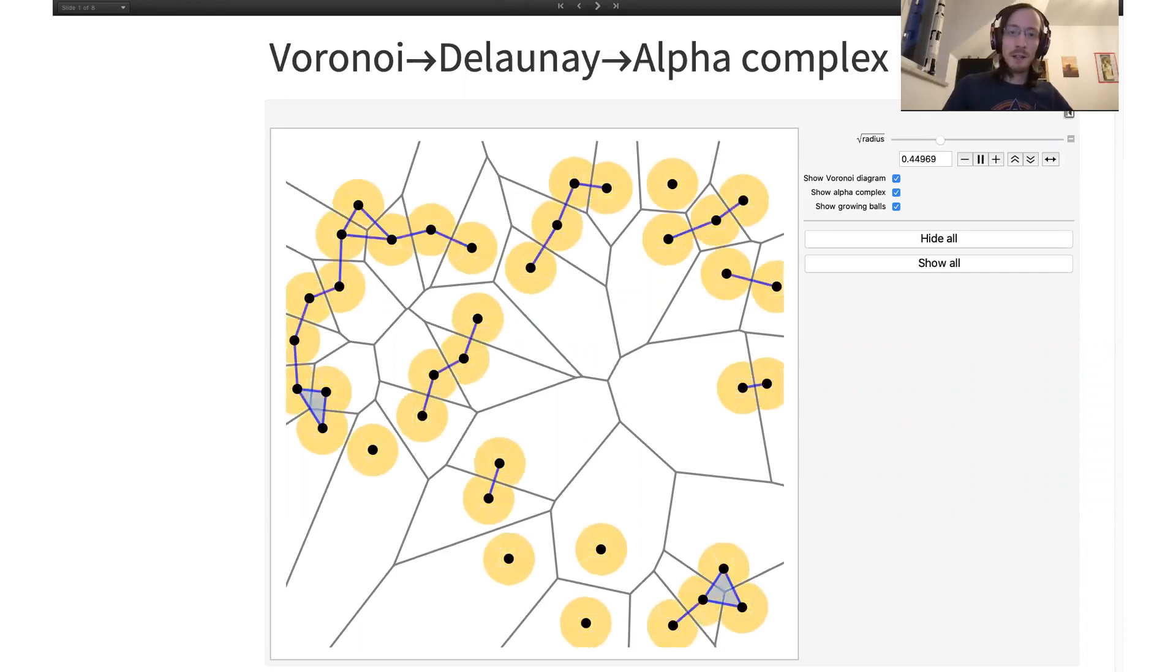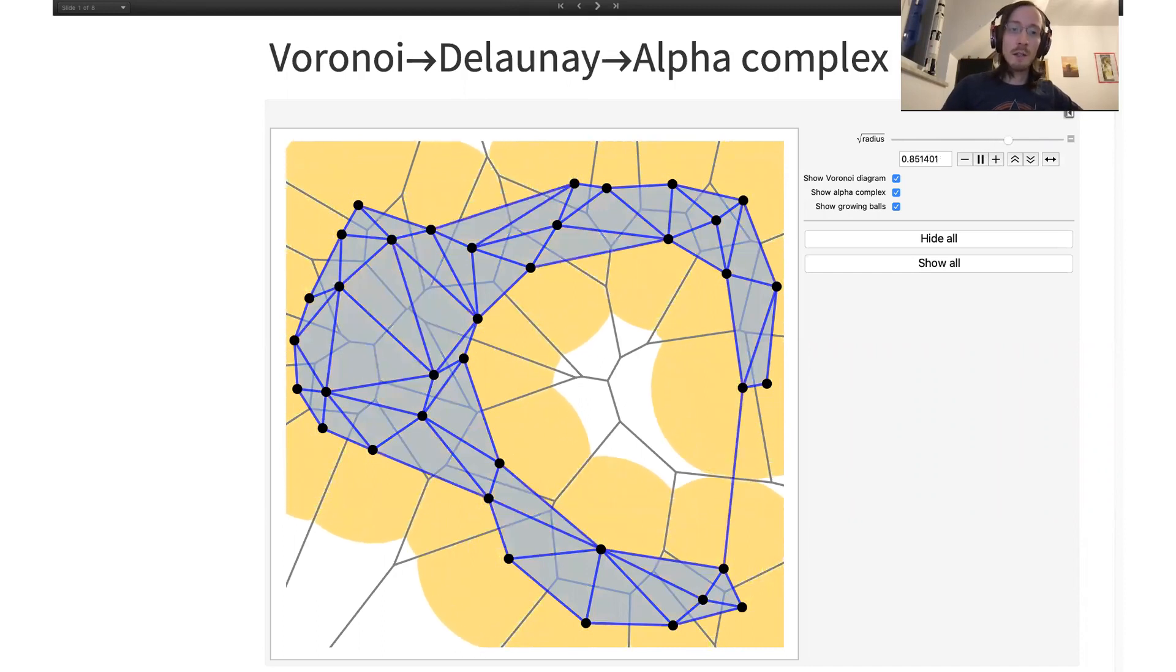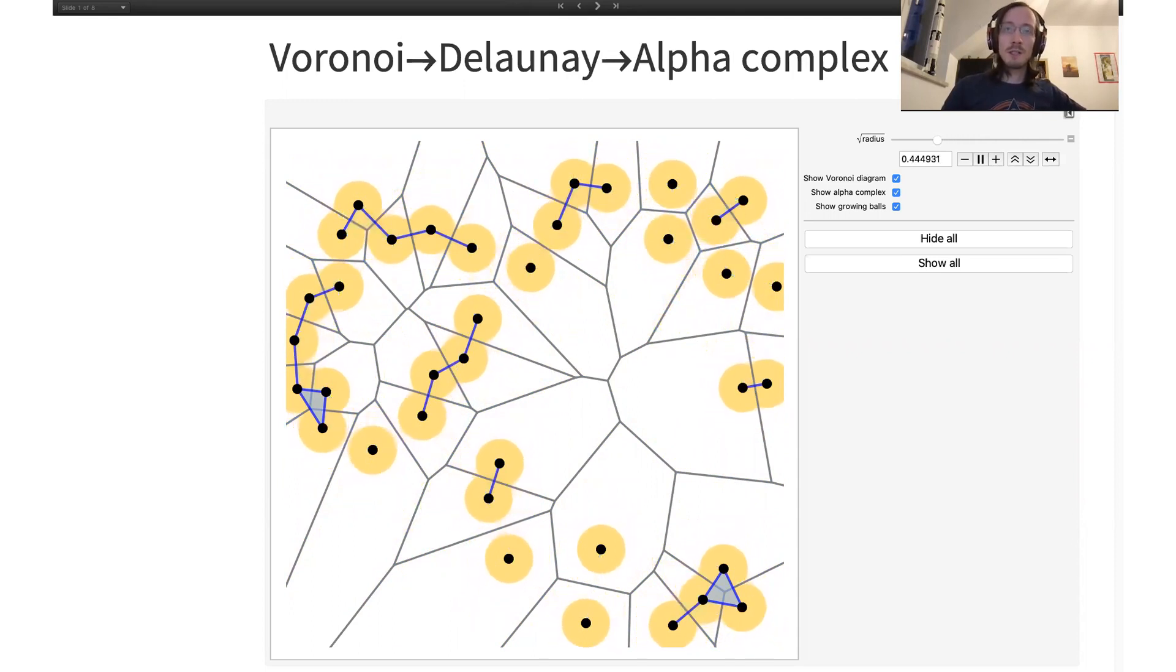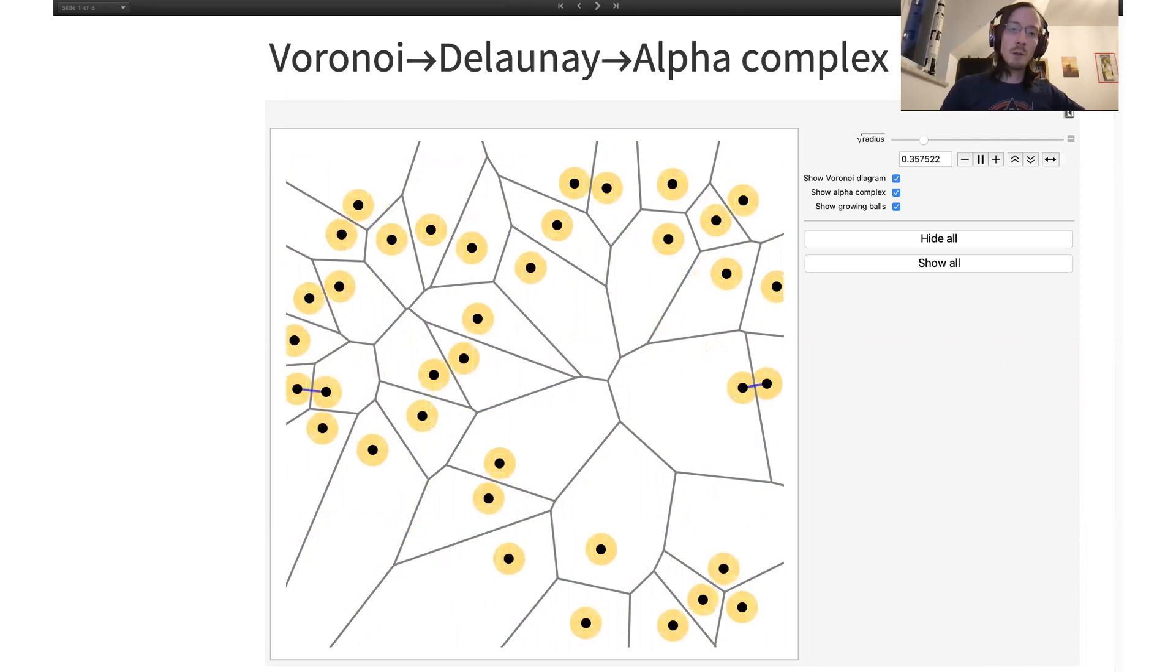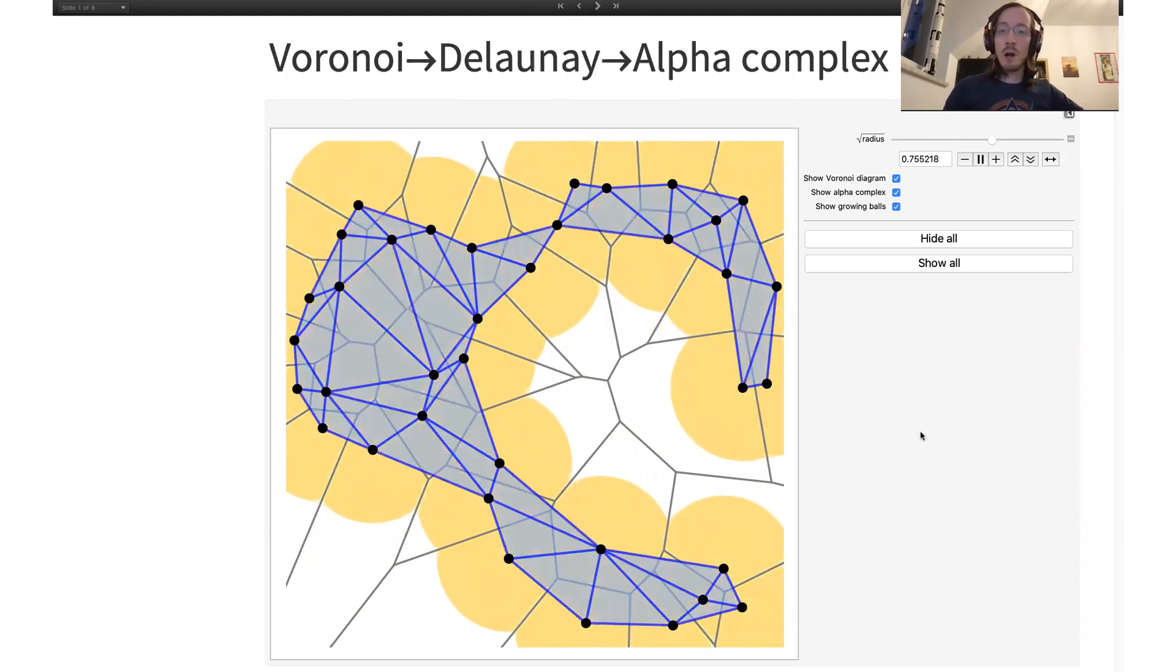Hi, my name is Ondra, and in this tutorial I will introduce three basic constructions that are widely used in topological data analysis: Voronoi diagrams, Delaunay complexes, and alpha complexes. I want to give you a visual intuition of what these objects are and how they interact with each other. To keep things simple, I will only talk about the two-dimensional case, but everything also generalizes into higher dimensions.